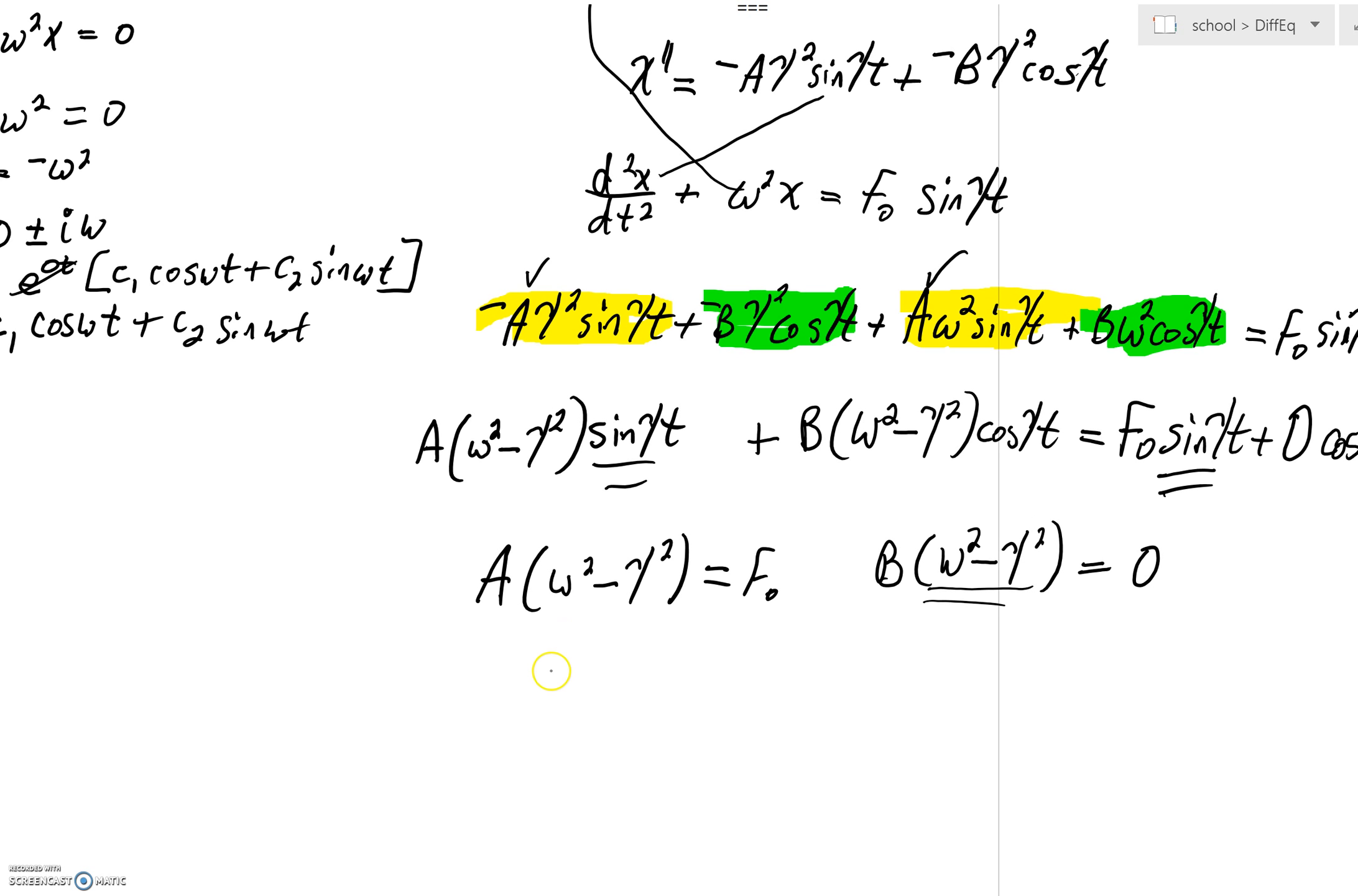We're going to assume that that's not zero. And what does that really mean is it means we can divide by it. So A would be f₀/(ω² - γ²). And that would also mean that B would equal zero.